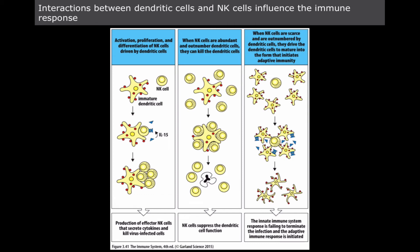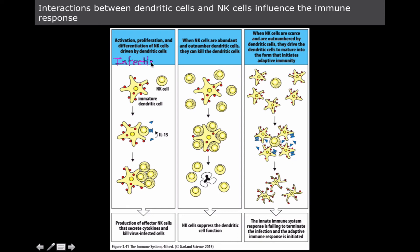Another critical function of natural killer cells is controlling the decision of whether or not to call the adaptive immune system for help. Some people actually call natural killer cells the T cells of the innate immune system, and that's fitting because they play a huge role in this regulatory decision. As this diagram shows, in the context of a viral infection, the activation, proliferation, and differentiation of natural killer cells is driven by dendritic cells, which sample their environments and present antigens on their surface.